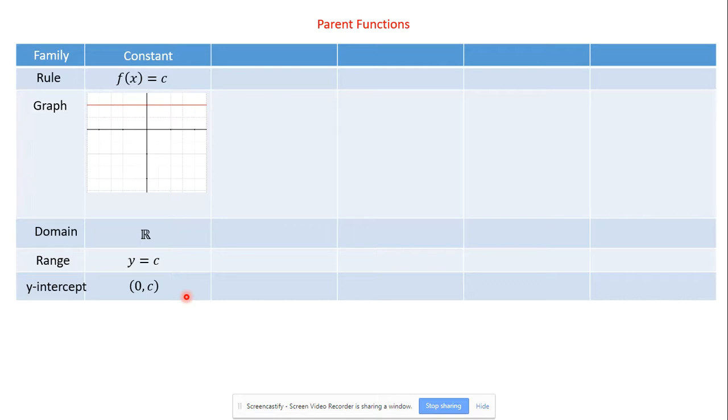The next family, which is slightly less boring, is the linear family. You spend a lot of time and effort on this in Algebra 1, working with lines. The rule, the most basic linear equation, is f(x) = x. Slope 1, y-intercept is 0, right? mx + b. There's no m, so that means 1. There's no b, that means 0. The graph of this line is just this one. It's diagonal, slope 1, y-intercept is 0. Using transformations, we'll be able to move this into any other line we want, but the parent function is just this one.